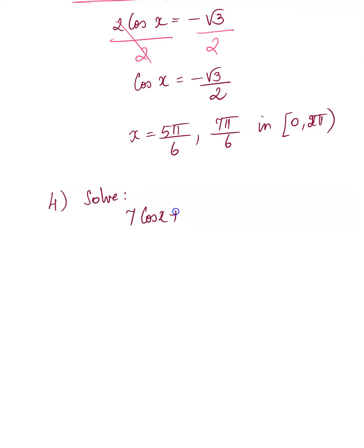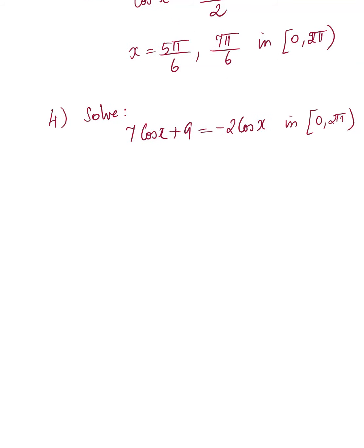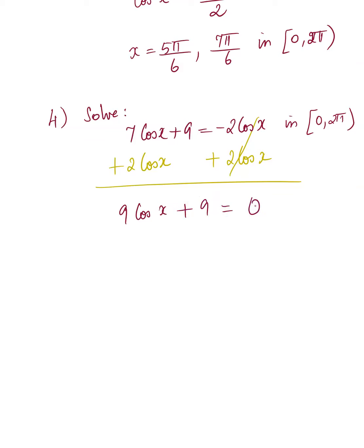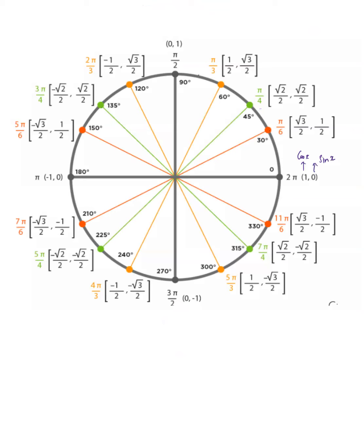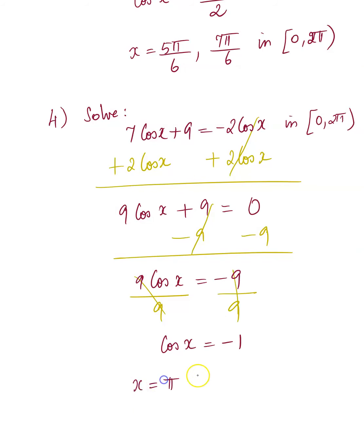Next problem: 7cos(x) + 9 = -√3/2. Add 2cos(x) to both sides and simplify. We get 9cos(x) = -9. Divide by 9 on both sides, giving cos(x) = -1. On the unit circle, the x-coordinate equals -1 only at π. Therefore x = π in the given interval.